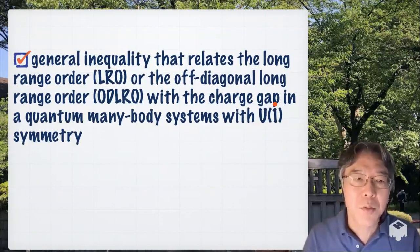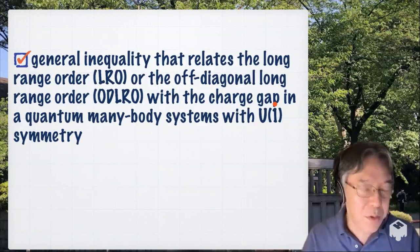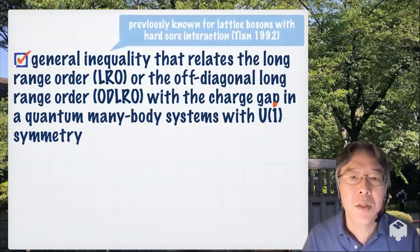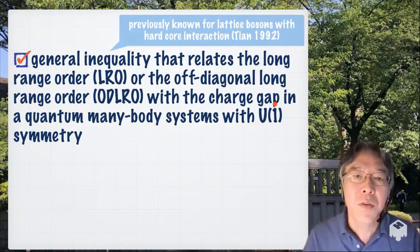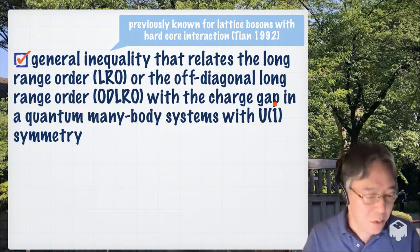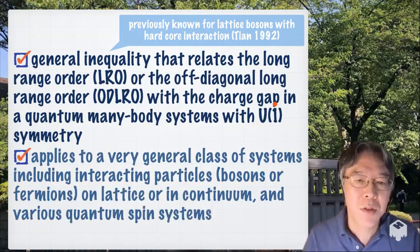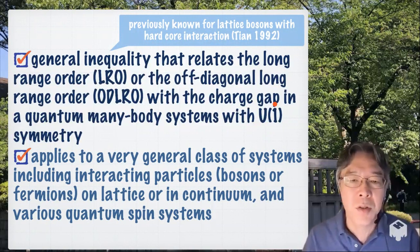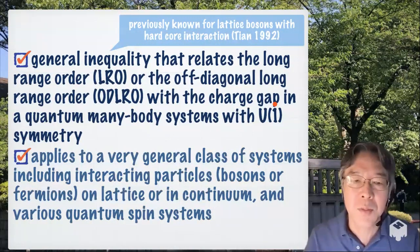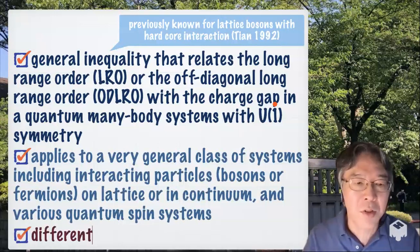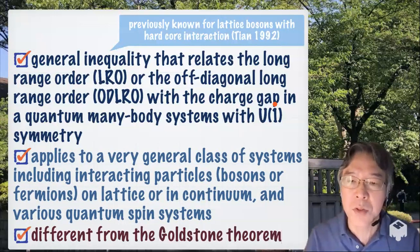But then one of our friends, Hosho Katsura, discovered that back in 1992, Tian proved the same inequality for the special case of lattice bosons with hardcore interaction. But our proof is much simpler and also applies to a very general class of systems, including interacting particles, bosons or fermions on lattice or in continuum, and various quantum spin systems. And let me note that our inequality is very different from the Goldstone theorem.